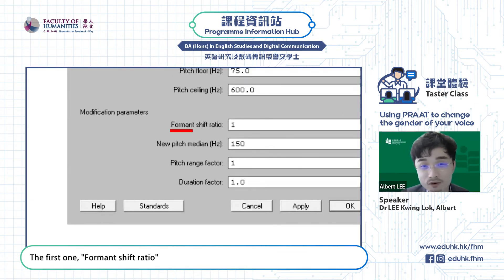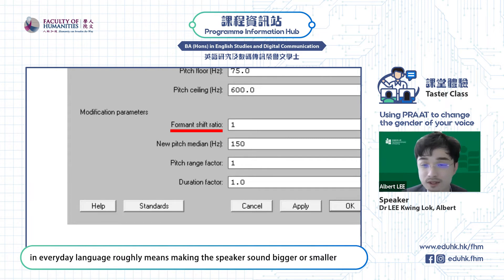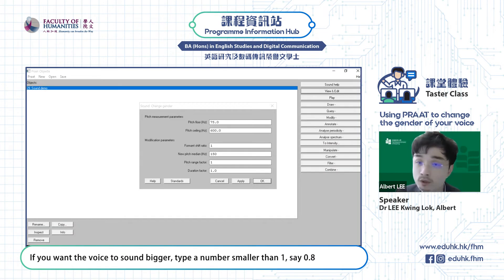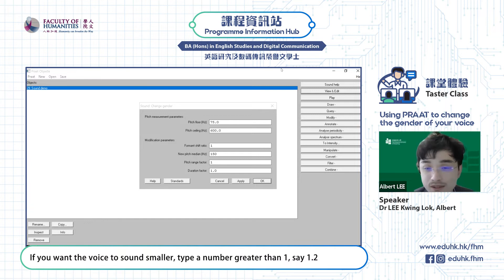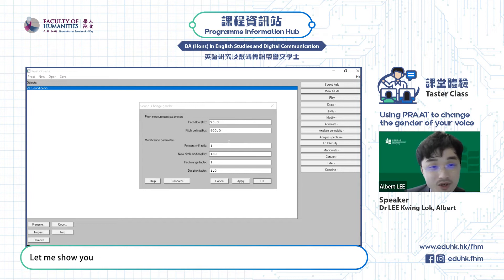The first one, Formant Shift Ratio, in everyday language roughly means making the speaker sound bigger or smaller. If you want a voice to sound bigger, type a number smaller than 1, say 0.8. If you want a voice to sound smaller, type a number greater than 1, say 1.2. Let me show you.